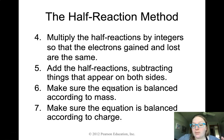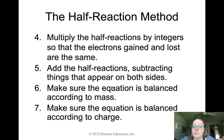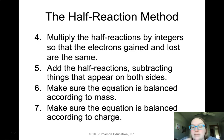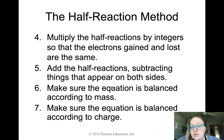Step five: add the half-reactions together, putting all reactants on one side of a new equation and all products on the other. Make sure to remove things that are present on both sides — if one side has six electrons and the other also has six electrons, cross them out. Same goes for waters or H+ ions that appear on both sides. Step six: verify the equation is balanced according to mass — check that atom counts are equal on both sides.